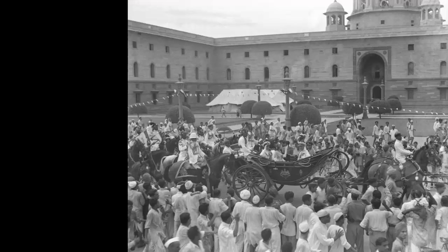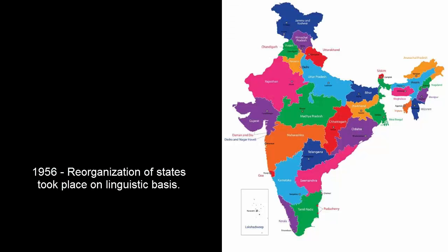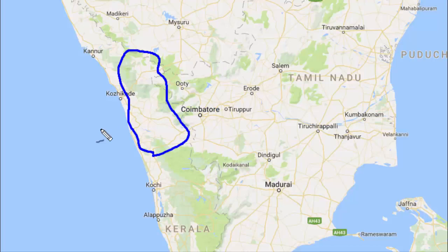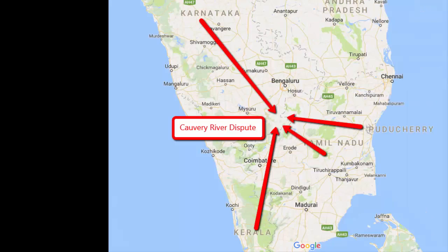This problem got even bigger post-independence. In 1947, India won independence from the British. In 1956, the reorganization of the states of India took place and state boundaries were redrawn based on language preference. As a result, parts of Malabar went to Kerala state, and Puducherry became a Union territory. All these changes further changed the equation, as Kerala and Puducherry started claiming their share of Kaveri river water.